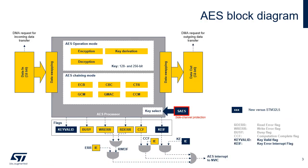This AES block diagram highlights the new features supported by the STM32U5 compared to STM32L5. The key valid flag and the key error interrupt flag are new. Key valid is set when a valid key is loaded in key registers. Key EIF is set when key information failed to load into key registers. The other flags are also present in the STM32L5.